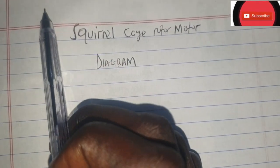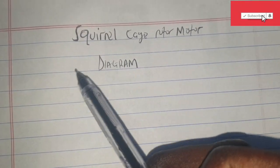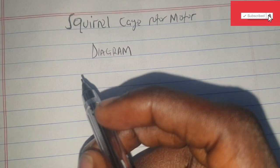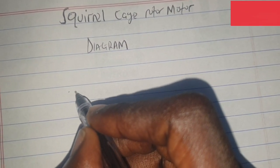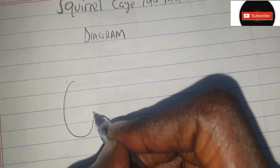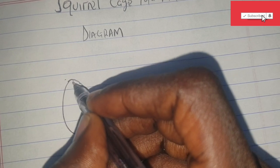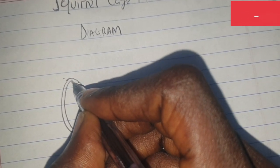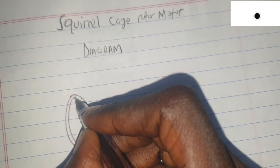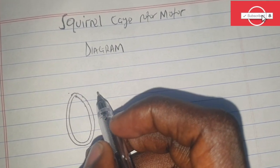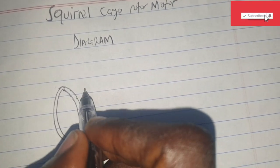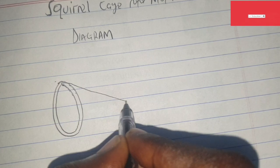Hello my lovely students, welcome back again to this lecture. Today we are going to draw the diagram of a squirrel cage rotor motor. So let's start with our short-circuited end.